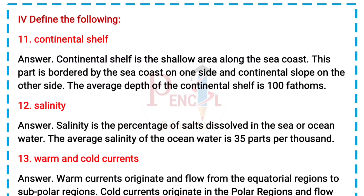4. Define the following. 11. Continental shelf. Answer: Continental shelf is the shallow area along the sea coast. This part is bordered by the sea coast on one side and continental slope on the other side. The average depth of the continental shelf is 100 fathoms.